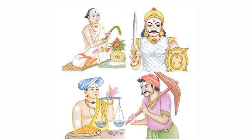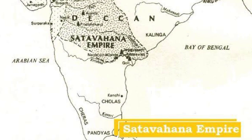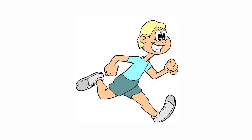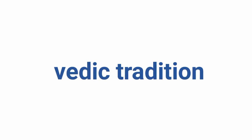Occupational associations existed and later emerged as commercial and trade organizations. Foreign trade was also encouraged. Major trade centers included Nasik, Kalyan, Broach, and Bhatkal.